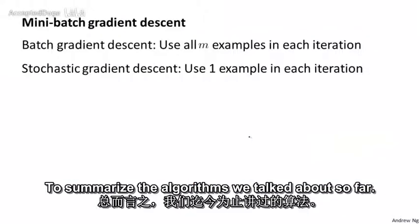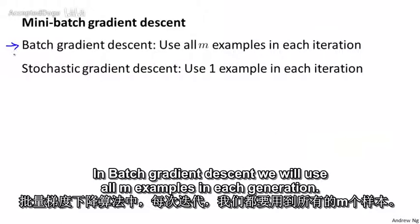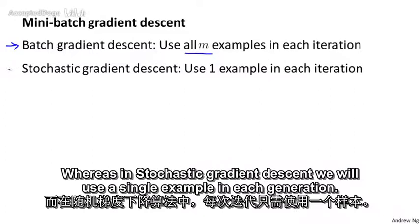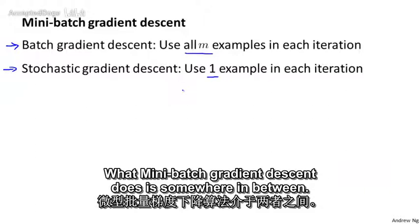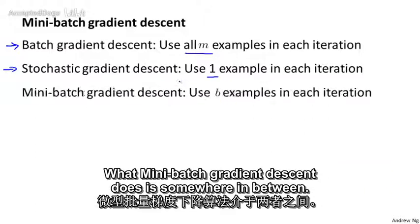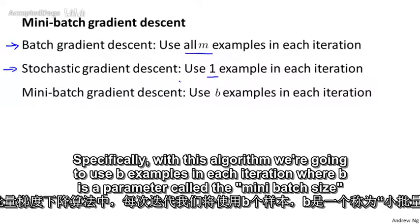To summarize the algorithms we've talked about so far, in batch gradient descent, we will use all m examples in each iteration, whereas in stochastic gradient descent, we will use a single example in each iteration. What mini-batch gradient descent does is somewhere in between. Specifically, with this algorithm, we're going to use b examples in each iteration, where b is a parameter called the mini-batch size.